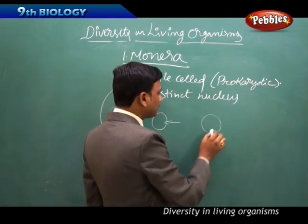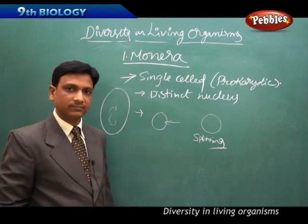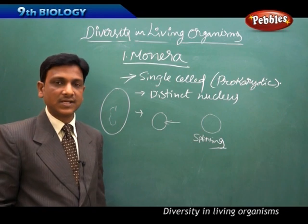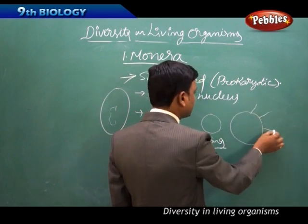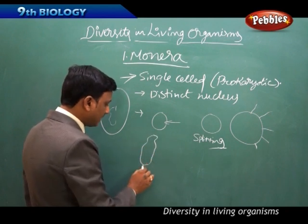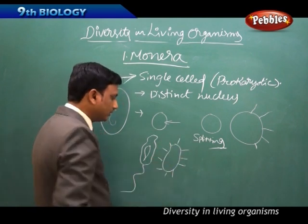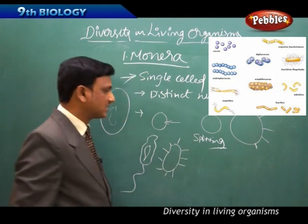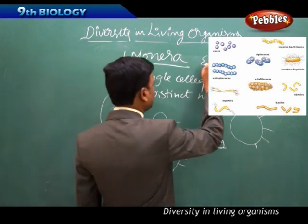Monerans reproduce by splitting — by division, dividing that single cell into two. That is the mode of reproduction in Monerans. They also have special structures on their surface: certain bacteria have flagella and certain bacteria have cilia, which help in their locomotion and other processes. The example for Monera is bacteria, and their locomotion is possible because of these extra structures like flagella and cilia.